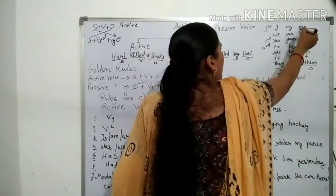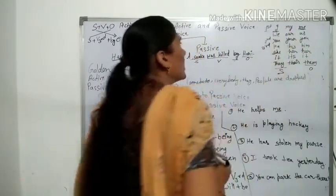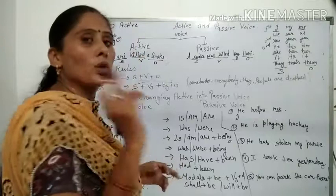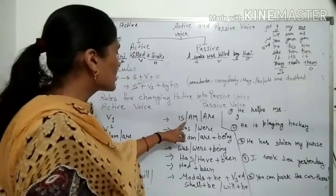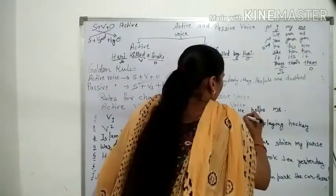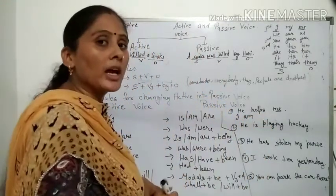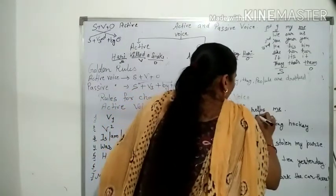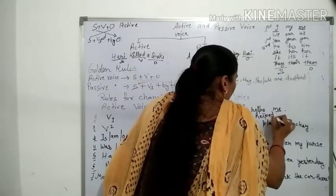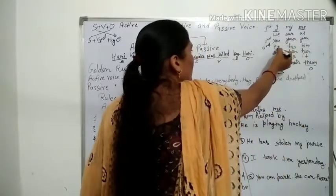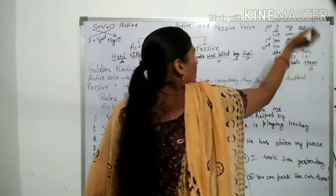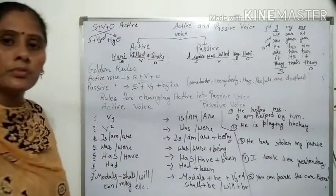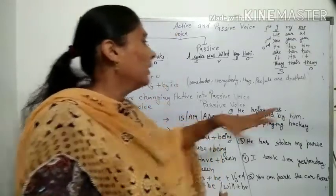Sentence में object 'me' है, तो me का subject I होना चाहिए — me subject में change होकर I बन जाएगा। अब helps — verb की first form है। I के साथ 'am' लगता है, singular के साथ 'is', plural के साथ 'are'। Help की third form है 'helped'। He subject है, तो उसका object him हो जाएगा। Final sentence: I am helped by him।